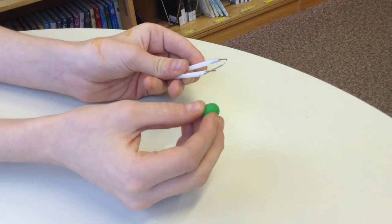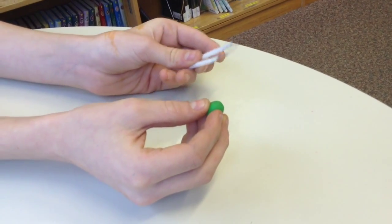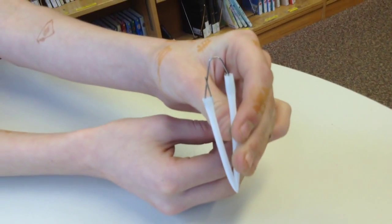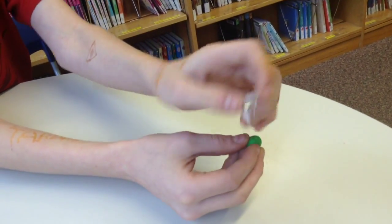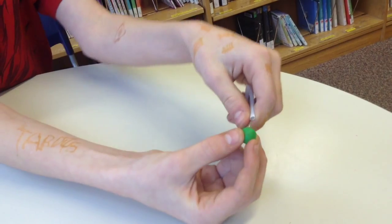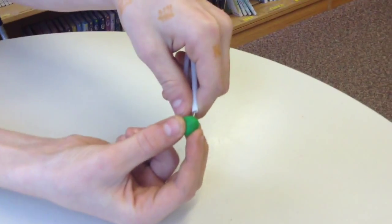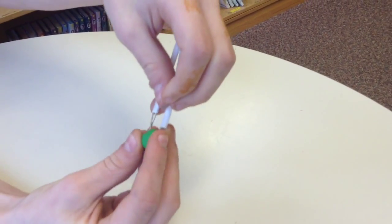Step 4. So, next you want to take the paper clip and the straw together. You want to take the clay and stick the clay onto the paper clip. Just make sure it's on there.